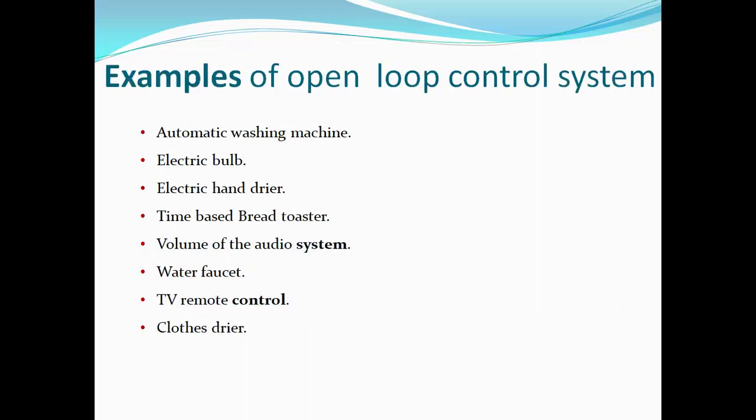We will see few examples of open loop control systems: automatic washing machine, electric bulb, electric hand dryer, time-based bread toaster, volume of the audio system, water faucet, TV remote control, and cloth dryer.